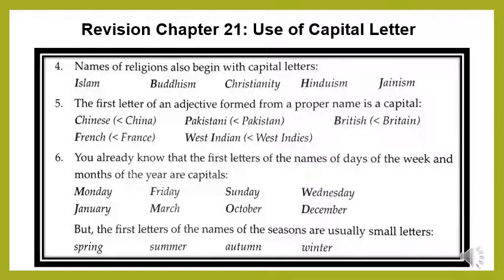Number 6. The first letters of the names of days of the week and months of the year are capitals. For example: Monday, Friday, Sunday, Wednesday, January, March, October, December. But the first letters of the names of the seasons are usually small letters. So be careful when you write the name of a season — it always starts with a small letter, not a capital letter.